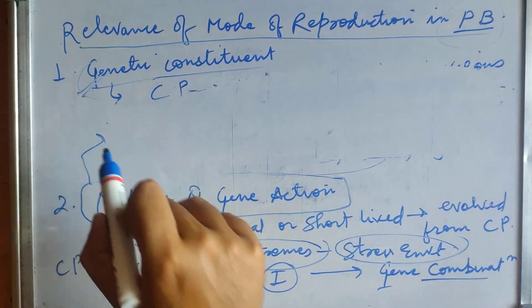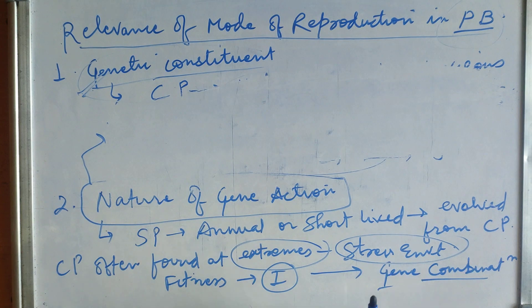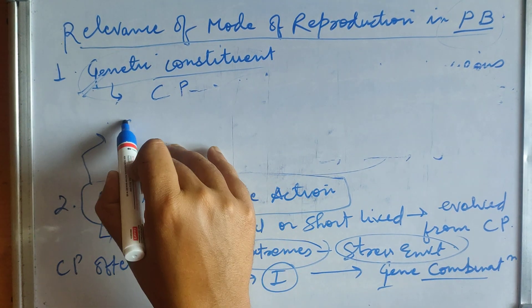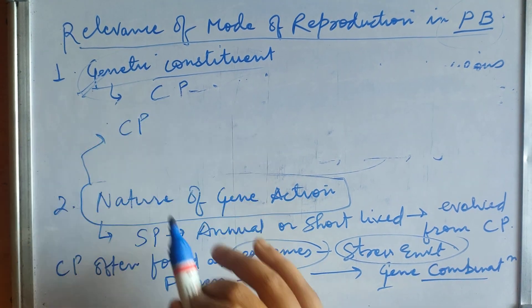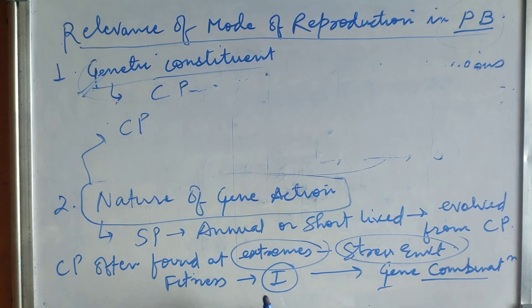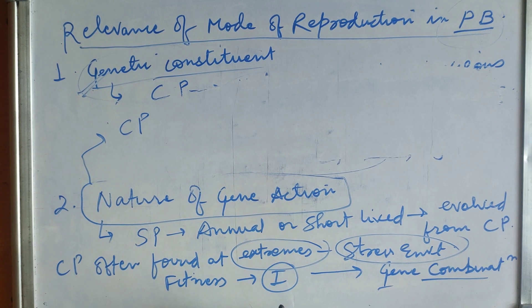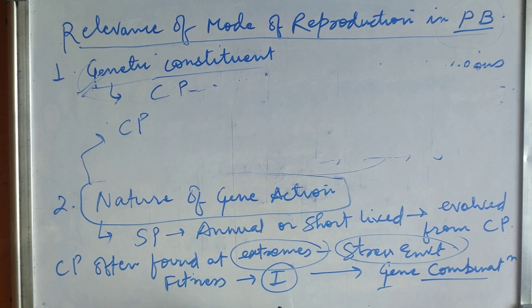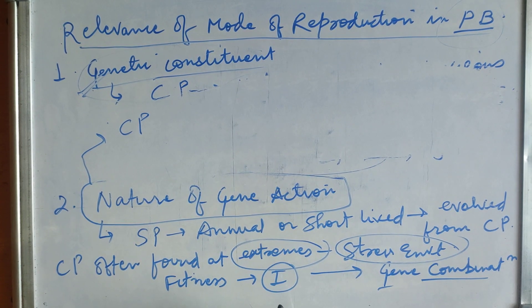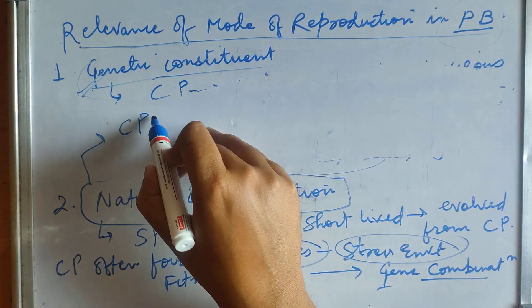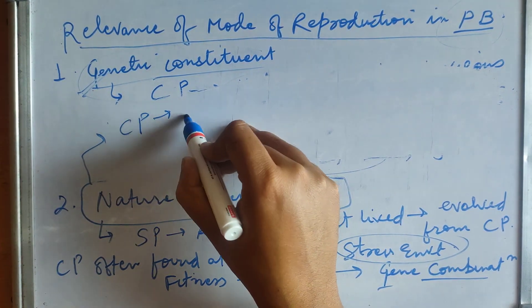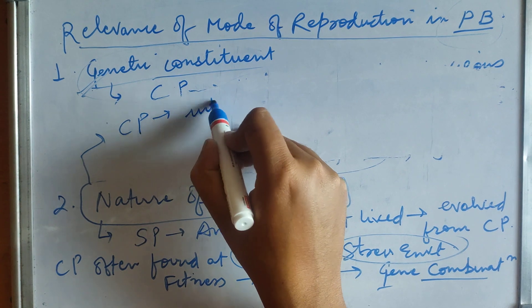In cross-pollinated species, there is continual interconversion of variability, maintaining a wide range of gene combinations in the population.